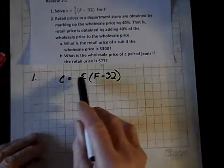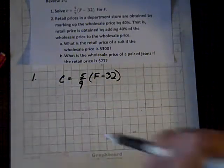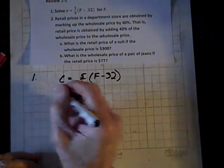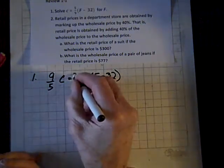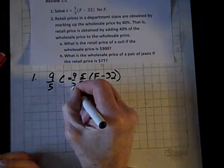So the first thing we have to do, let's get rid of that 5 ninths, so we'll multiply both sides by the reciprocal of 5 ninths, which is 9 fifths.